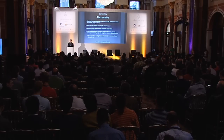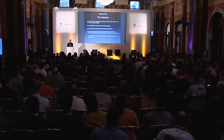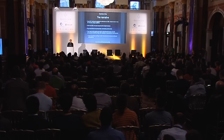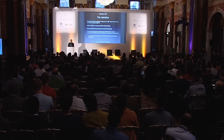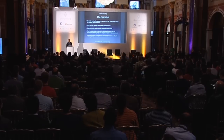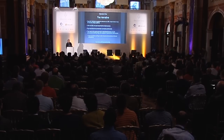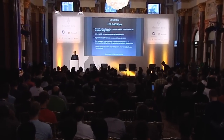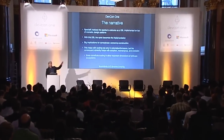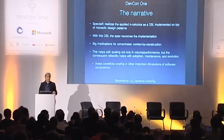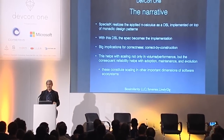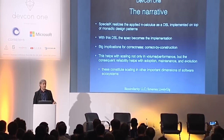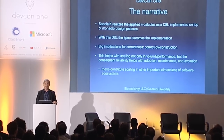If you have a spec in the applied pi calculus, I have a bunch of libraries up on GitHub called Special K. They are an implementation — an executable distributed virtual machine of the applied pi calculus. So if you have a spec, you can turn it straight into an implementation. If you have a spec that you can reason about for correctness properties, then you can actually run Casper.